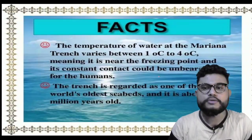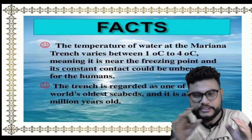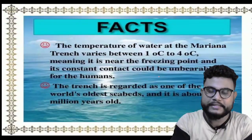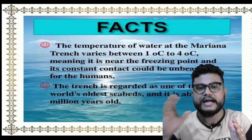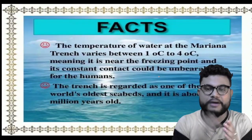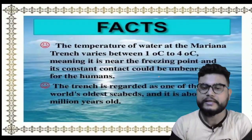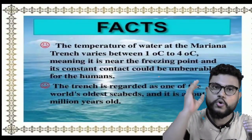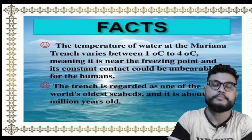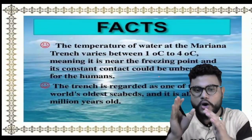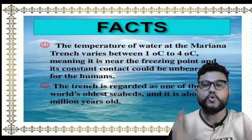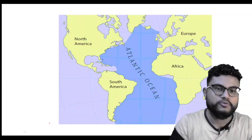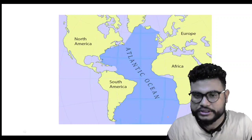Some facts about the Mariana Trench: the water temperature in this region stays between 1 degree Celsius and 4 degree Celsius — close to freezing point. The trench is regarded as one of the world's oldest seabeds, and it is about 180 million years old.